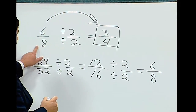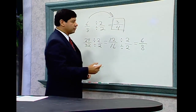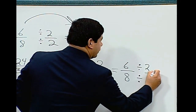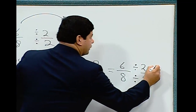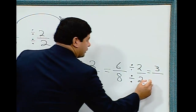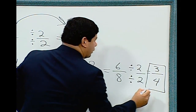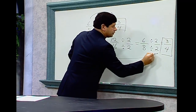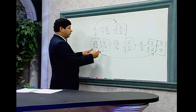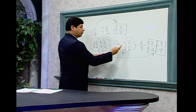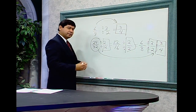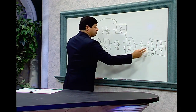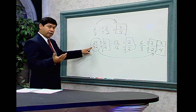Notice a pattern. Now 6 over 8 are even numbers, so let's divide again by 2. 6 divided by 2 is 3, and 8 divided by 2 is 4. So 24 over 32 reduces to 3 fourths. We did that by reducing first by 2, then by 2 again, and then by 2 again — the same as reducing by 2 times 2 times 2, which is 8.